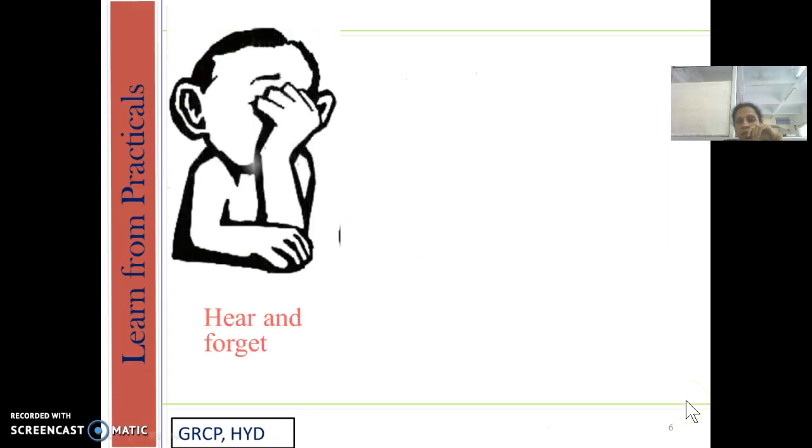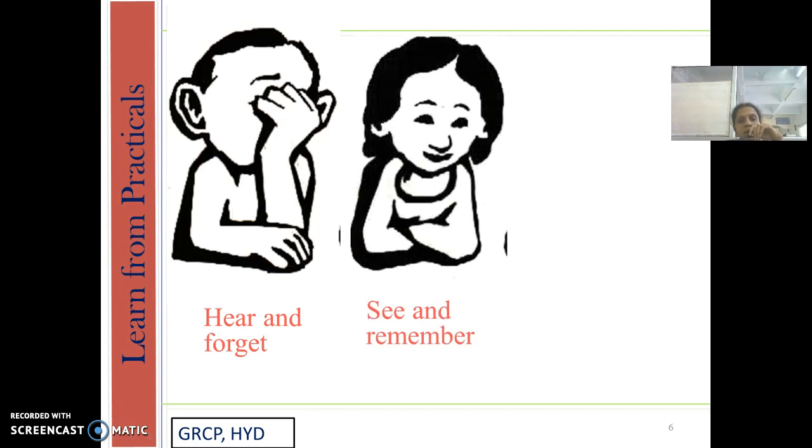So let us have a glance at this. Whatever we hear, generally we forget. Of course there is an exception. If we hear some gossip, we may remember that well. That is a different story. I am talking about subject only, because here only ears are involved. Now coming to see, whatever we see, we remember. For example, movies we remember because our eyes are involved in that. So here only eyes and mind is involved, and here ears and mind is involved.